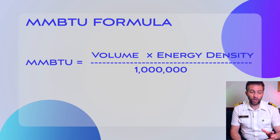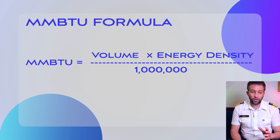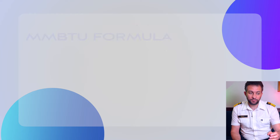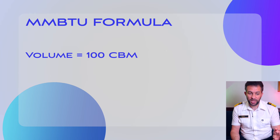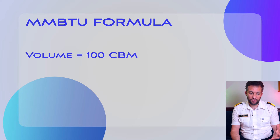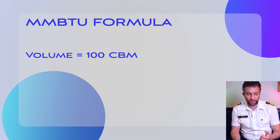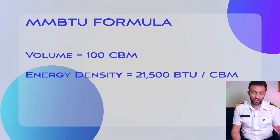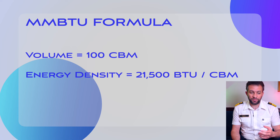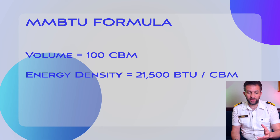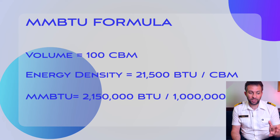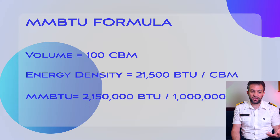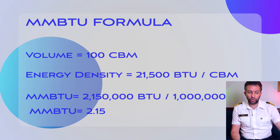Now let's look at the formula for calculating MMBTU. The basic formula is: MMBTU = volume (in cubic meters) × energy density ÷ 1,000,000. Step one, determine the volume of LNG in cubic meters — for example, 100 cubic meters. Energy density can vary based on the composition of natural gas, but a typical value is about 21,500 BTU per cubic meter. Applying the formula: MMBTU = 100 × 21,500 ÷ 1,000,000 = 2.15 MMBTU. So 100 cubic meters of LNG equals approximately 2.15 MMBTU. This is a rough calculation.